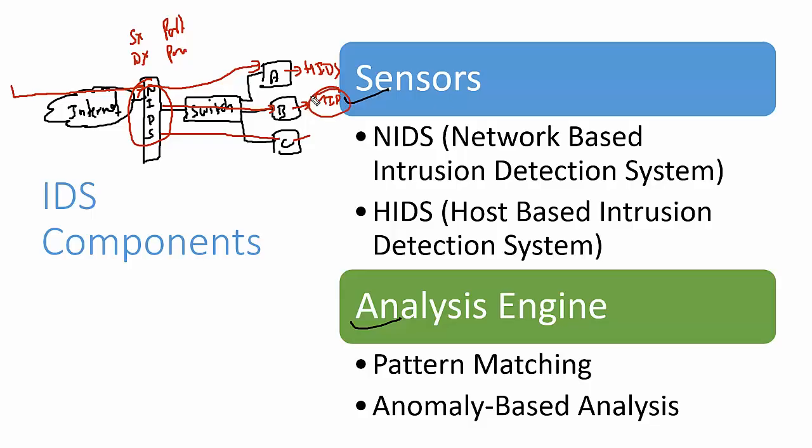NIDS monitors network-level traffic, while HIDS monitors host-level traffic such as modification attempts at the system level — tools like Tripwire are used for this. One concern with installing HIDS on every system is the performance overhead. That's why we prefer NIDS at the network border to monitor all incoming enterprise traffic, and HIDS on individual systems for host-level activity, similar to antivirus software.